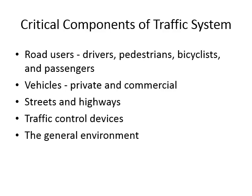First of all, let us understand the components of our traffic system. The traffic system comprises five components, starting with road users. Road users are basically human beings who are on the road for any reason — they can be in vehicles such as drivers and passengers, outside vehicles as pedestrians, or using any other type of vehicle such as a bicycle.